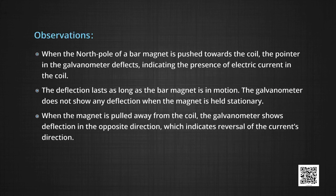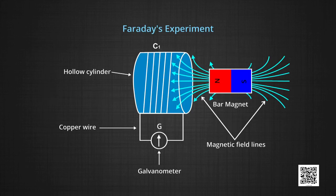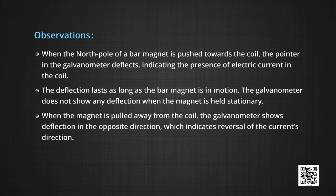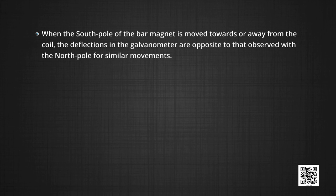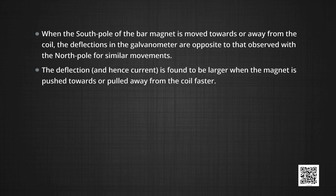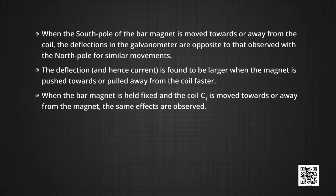The deflection lasts as long as the bar magnet is in motion. The galvanometer does not show any deflection when the magnet is held stationary. When the magnet is pulled away from the coil, the galvanometer shows deflection in the opposite direction, which indicates the reversal of the current's direction. When the south pole of the same bar magnet is moved towards or away from the coil, the deflections in the galvanometer are opposite to those observed with the north pole for similar movements. The deflection and hence current is found to be larger when the magnet is pushed or pulled faster. When the bar magnet is held fixed and the coil C1 is moving towards or away from the magnet, the same effects are observed.